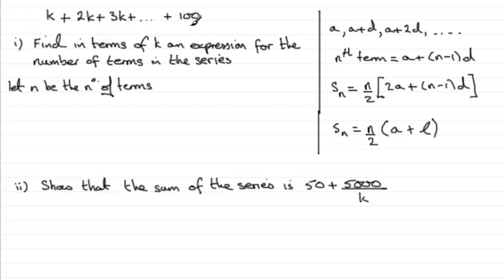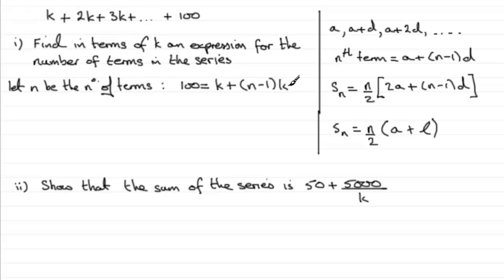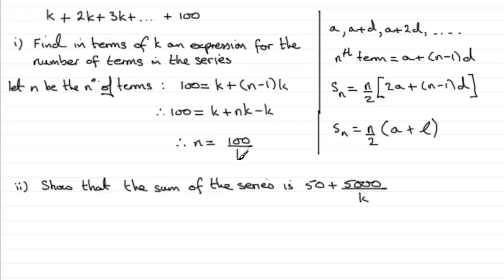The nth term in this series — the 100 — will be equal to a plus (n minus 1)d. So we can say that 100 must equal the first term, which is k, plus (n minus 1) multiplied by the common difference. We're adding k each time, so the common difference is k. Multiplying this out: 100 equals k plus nk minus k. Those two k's cancel, leaving nk equals 100. Therefore, the number of terms n equals 100 divided by k.